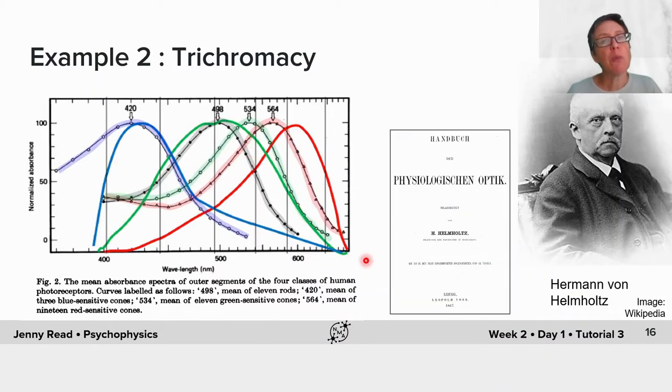Their absorbance spectra are shown here in the paper from 1980. But by purely psychophysical means, Hermann von Helmholtz was able to deduce really fairly accurate approximations to the sensitivity of the underlying human mechanisms for colour perception back in the 19th century.